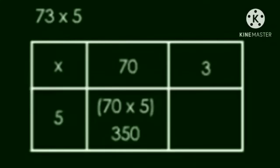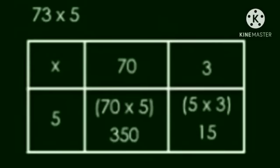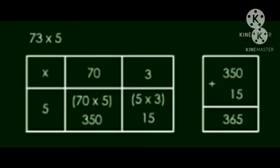So now first we will multiply 70 into 5, which is 350. Then 5 into 3, which is 15. Now add 350 plus 15. So the answer is 365.